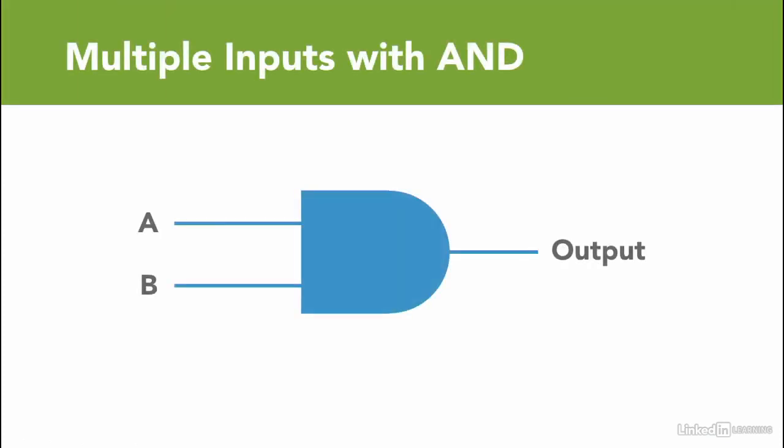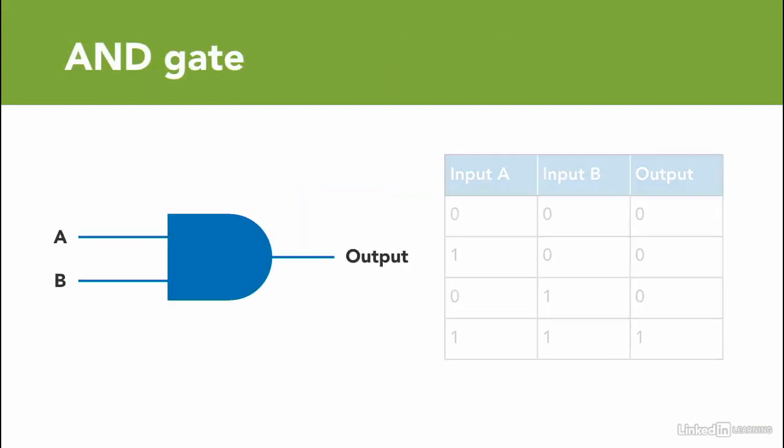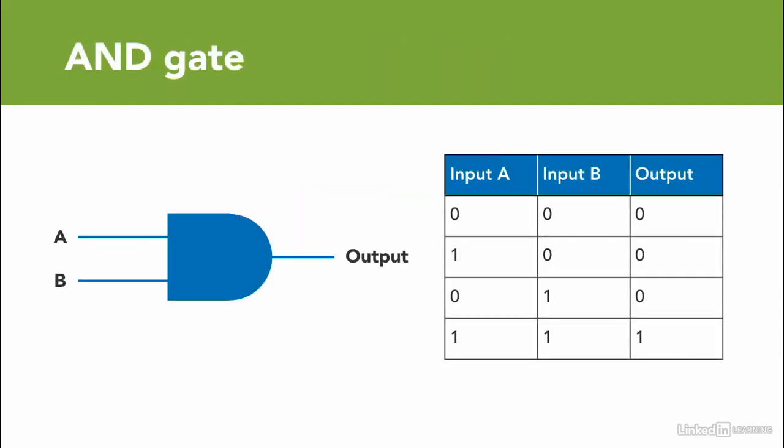The AND is similar to the function of the AND gate, where you can have any number of inputs but only one output. The truth table that you can see on the screen shows you that the output is only turned on when all inputs are true.